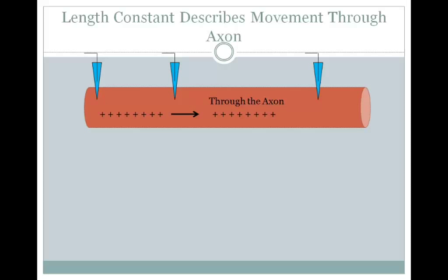Tau is equal to the membrane resistance times the capacitance of the membrane. So it will take a longer time to get to your final membrane voltage if you have a high membrane resistance, or a low membrane conductance, or a high membrane capacitance.